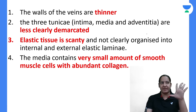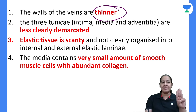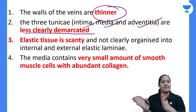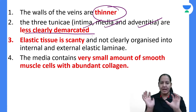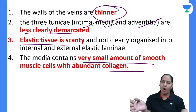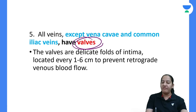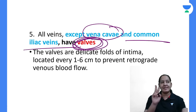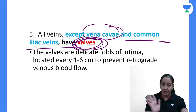Veins are similar to arteries except for five differences. The wall is relatively thinner, though three layers — intima, media, externa — are present but not very clearly demarcated. Elastic tissue is scanty and collagen is present in the externa and subendothelial tissue. Veins have valves, but arteries do not. All veins have valves except two: vena cava and common iliac vein. Maximum blood volume is present in veins.